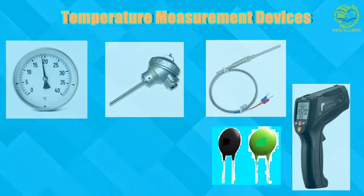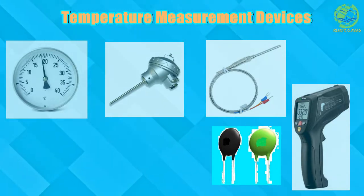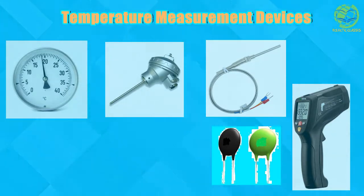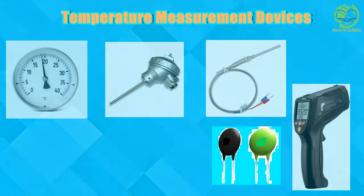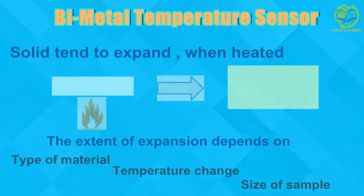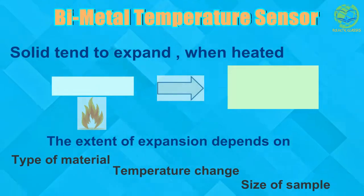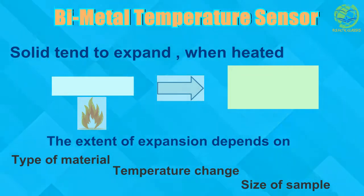Today we are going to study bimetal temperature sensors and field bulb temperature sensors. These two devices are used basically in different temperature gauges or temperature switches. We know that any solid has a tendency to expand when heated, and the extent of expansion depends on the type of material, the temperature change, and the size of the sample.